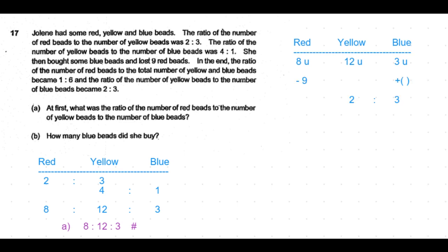9 of the red beads were lost and she bought some more blue beads. At the end, the new ratio between yellow to blue beads became 2:3. But notice that the yellow beads number has not changed and it continues to be 12 units.